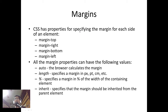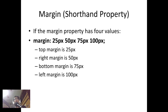All margin properties can have the following values: 'auto' means the browser calculates the margin and is mostly used for centering elements; 'length' specifies a margin in pixels, points, centimeters, or other units; 'percent' specifies a margin as a percentage of the width of the containing element; and 'inherit' specifies that the margin should be inherited from the parent element. Instead of specifying each side separately, we can use the margin shorthand property.